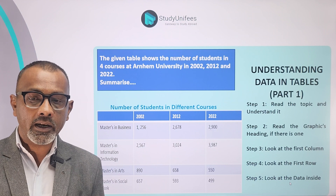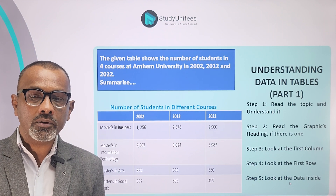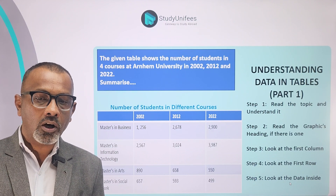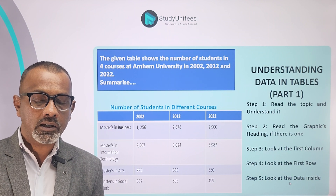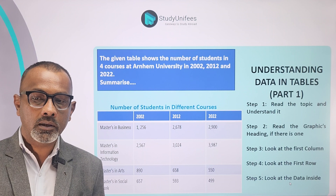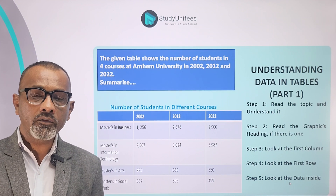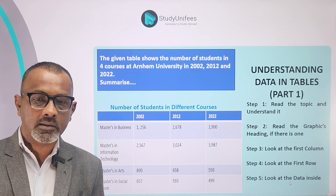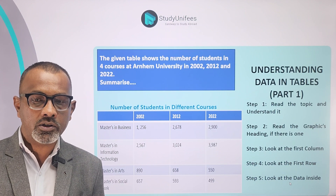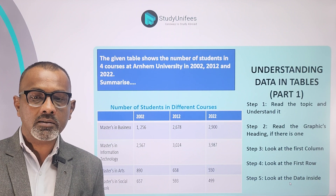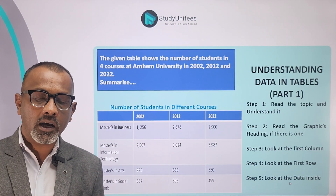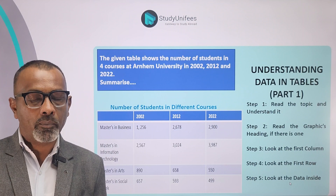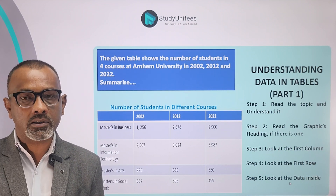Step number 2: read the graphic's heading — 'Number of students in different courses.' Step number 3: look at the first column — four courses: Masters in Business, Information Technology, Arts, and Social Work. Step number 4: look at the first row — the timeline: 2002, 2012, and 2022. Looking at the data inside, Masters in Information Technology is really popular, followed by Masters in Business, whereas the other two courses have fewer students. This is how the initial analysis for bar graphs, line graphs, pie charts, and tables is performed.